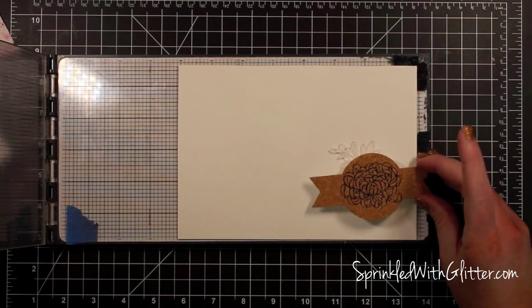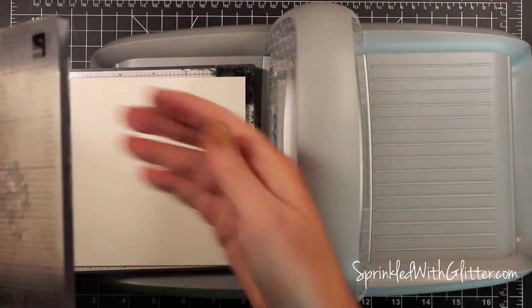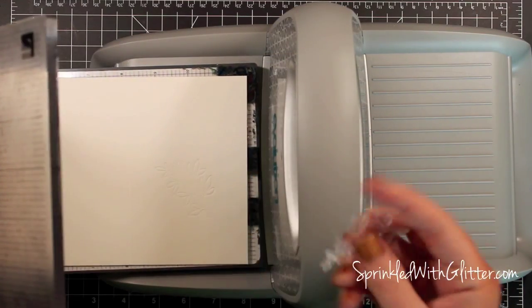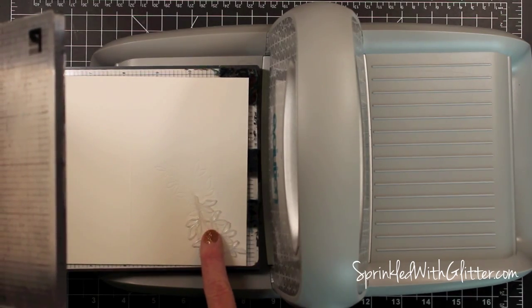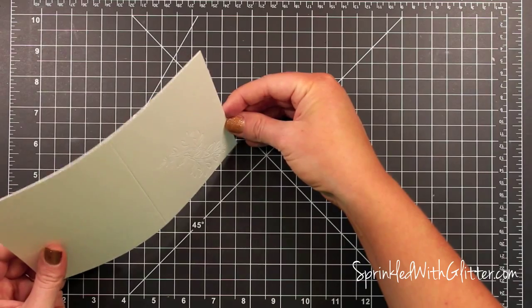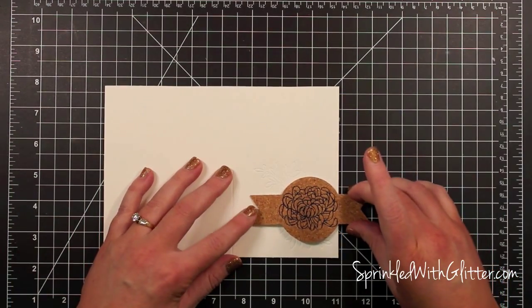And it's just going to create a pressed in image of that leaf pattern. So I'm just getting it positioned here. Once I get it positioned just where I want it, I'll just close my tool and then run it through my evolution again. Now once I got that first one pressed in, I just kind of flipped it over to where it would be coming out the bottom and just ran it through again. And you can see that really cool leaf pattern pressed into the paper there.